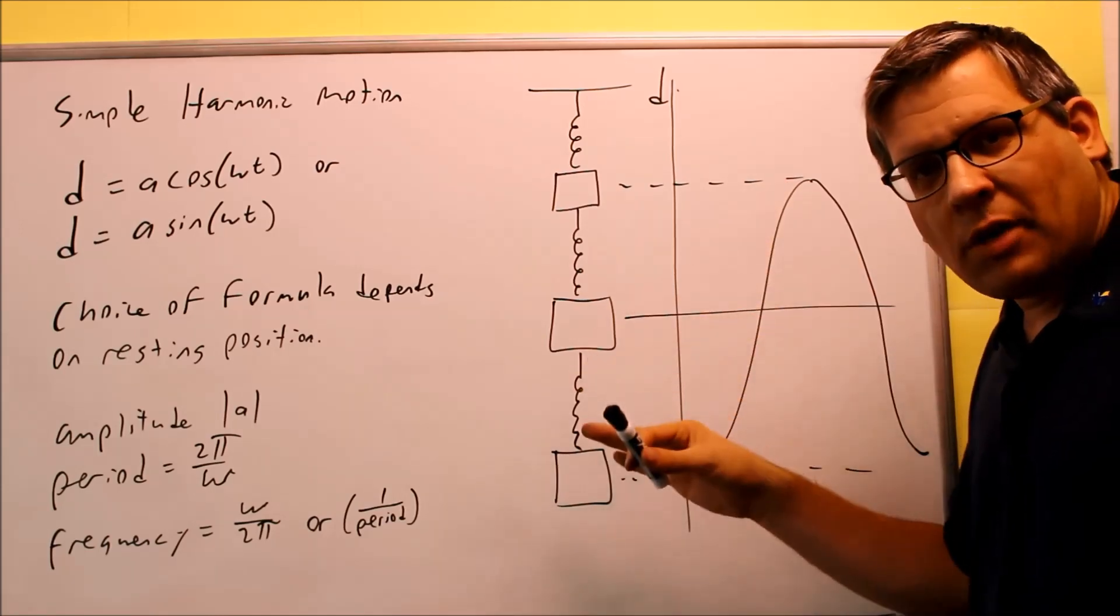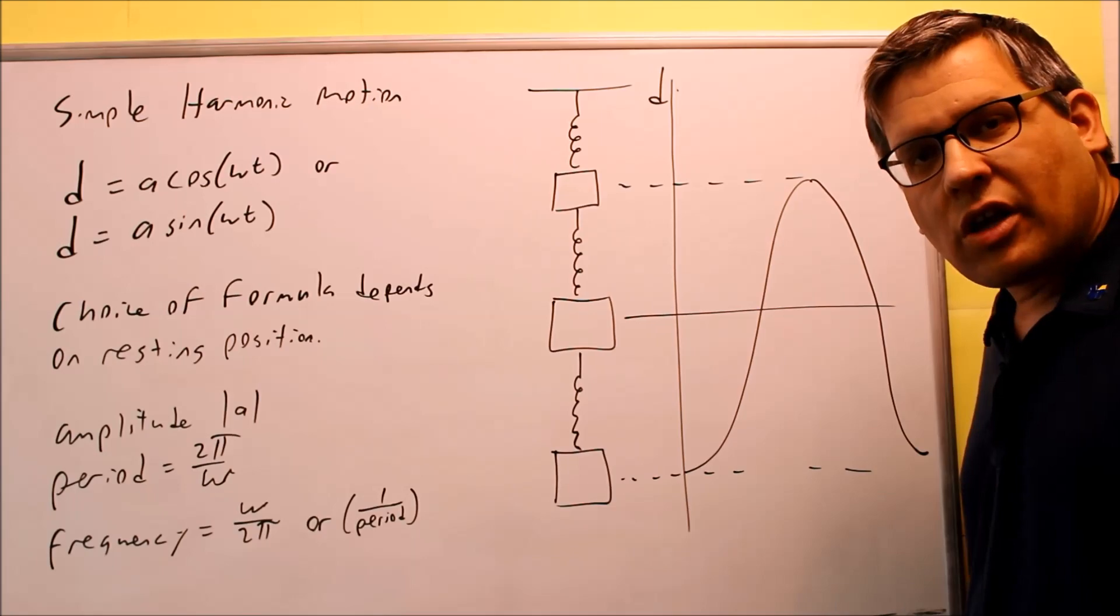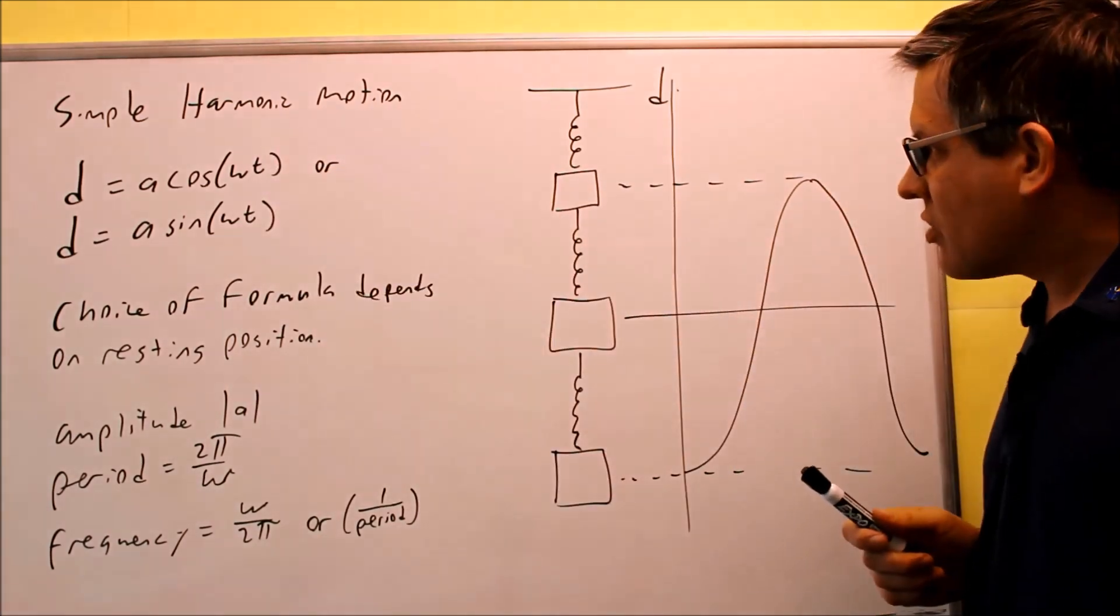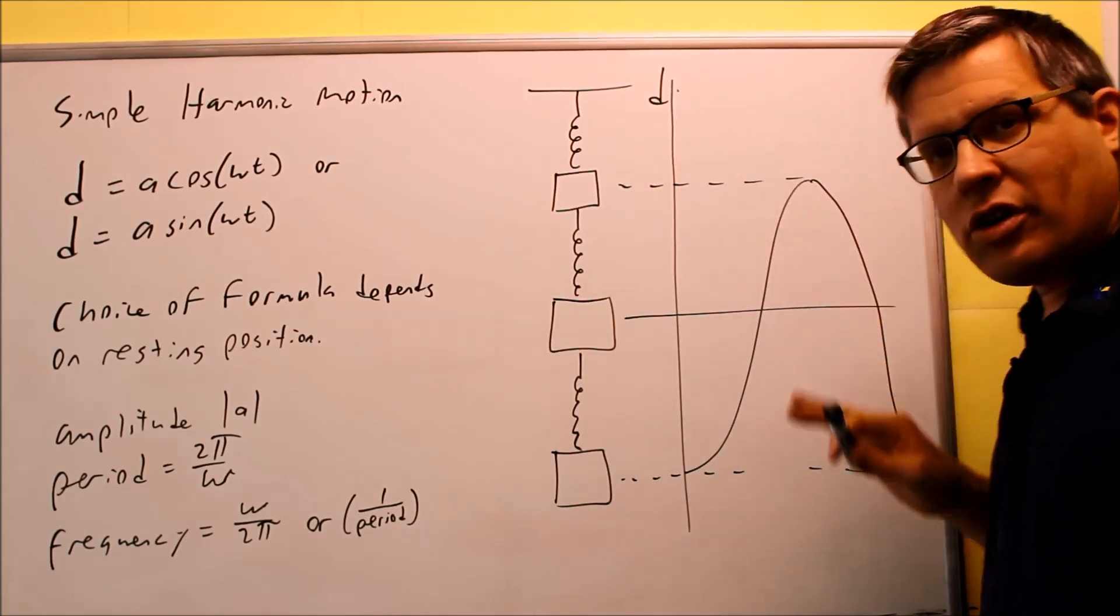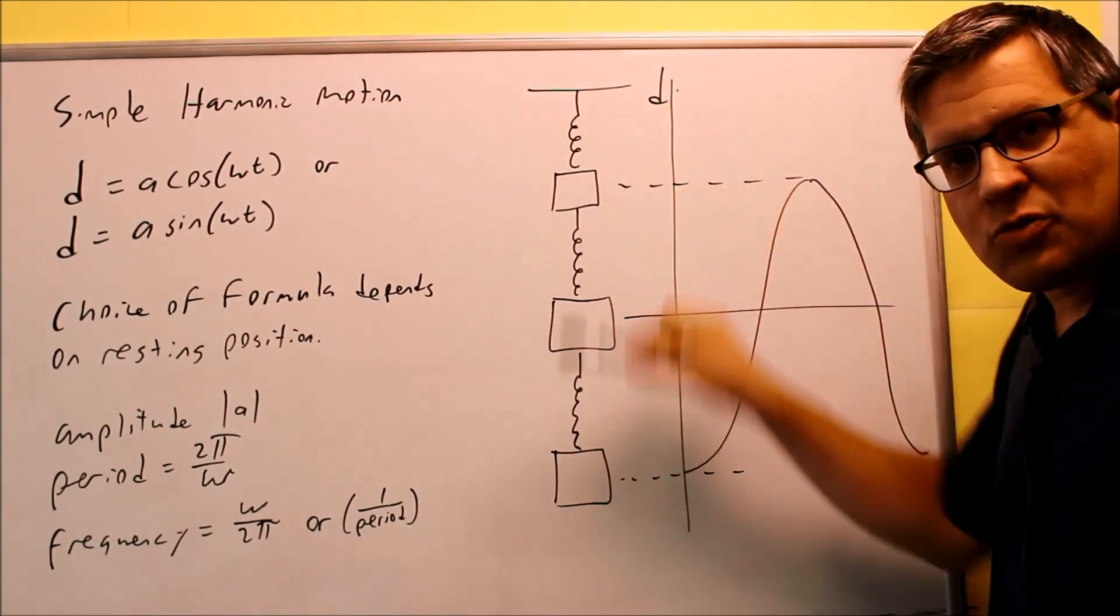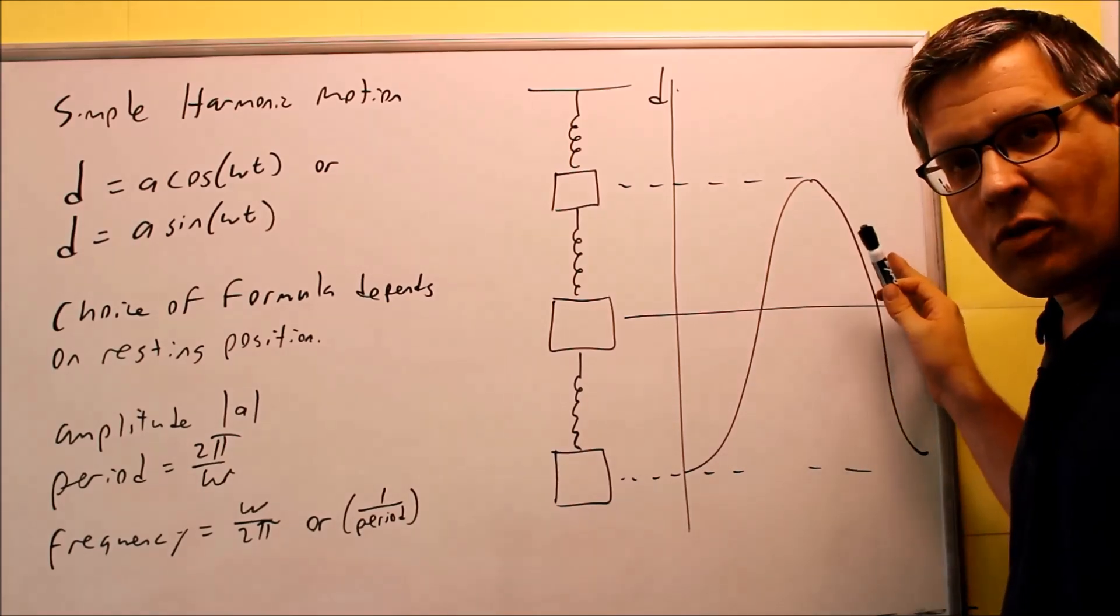So in order to describe that, we need to take a look at equations that go along with it. You can have either a cosine equation or a sine equation. So this graph right here, I try to illustrate what the relationship is between something that bounces back and forth and if you have a basic graph.